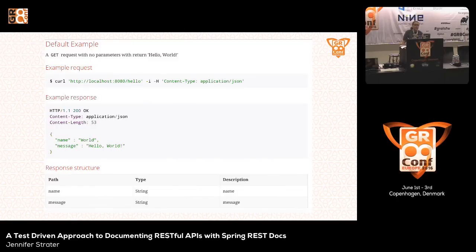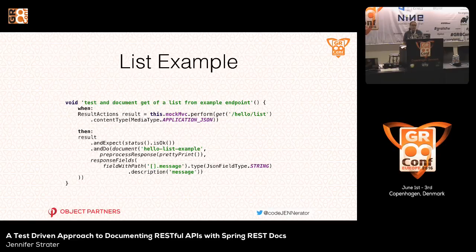In the documentation block, there are a few different things going on. The first is specifying what folder I want it to go to. You can add preprocessors — things like pretty printing, or if you want to change the URL because you're running it from a build server instead of your running application — as well as what fields you expect. This is really where it helps, because we know what we're expecting and compare that against what was actually generated. If I add this in and run the tests, I get a bunch of different examples formatted nicely: a curl request, an example response, as well as a table formatted with what the fields are. An important thing: if you're doing a list, embedded objects are done with square brackets.